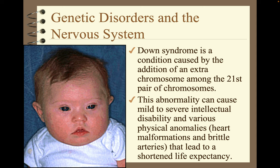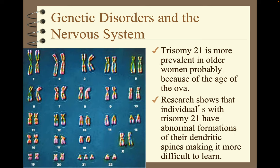Down syndrome is caused by the addition of an extra chromosome among the 21st pair of chromosomes — trisomy 21. This abnormality can cause mild to severe intellectual disability and various physical anomalies, heart malformations, and brittle arteries that lead to a shortened life expectancy. Trisomy 21 is more prevalent in older women, probably because of the age of the ova. Research shows that individuals with trisomy 21 have abnormal formations of their dendritic spines, making it more difficult to learn.